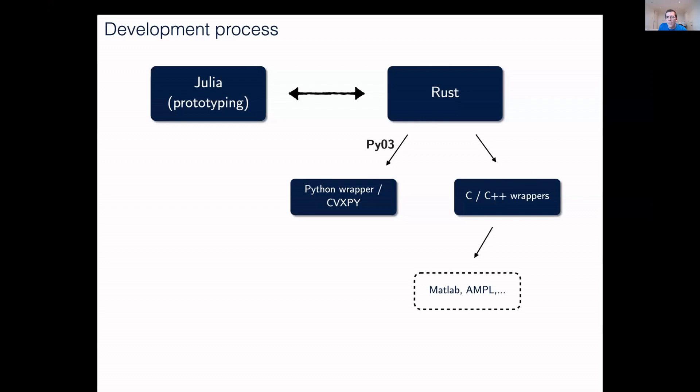We also provide a connection to CVXPY, which is a really common modeling tool in Python. But we're also working on C and C++ wrappers for the Rust code. Through that, we can make MATLAB, AMPL, and interfaces to Drake and so on. That's working really well for us, and we're going to probably keep those two things live for the foreseeable future.